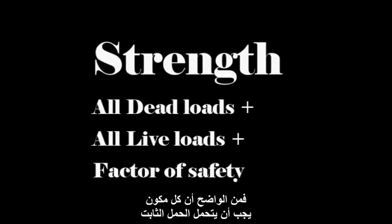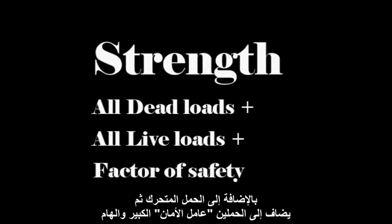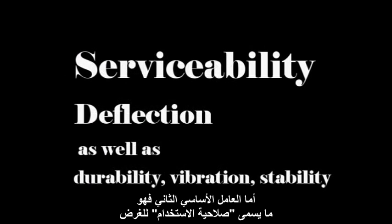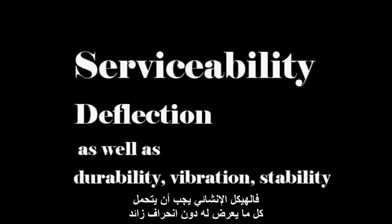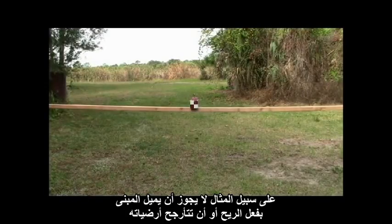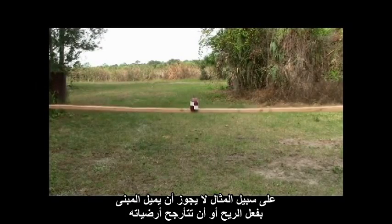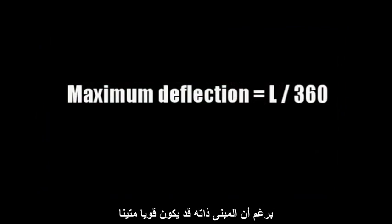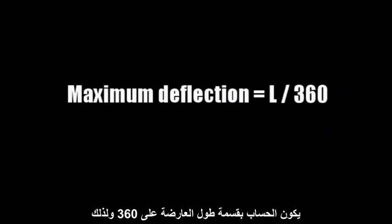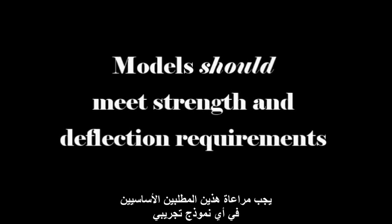There are two fundamental parameters of structural design. The first is strength — each component must be able to hold the dead load plus the live load plus a significant factor of safety. The second is serviceability — the structure must support all loads without excessive deflection. The building can't sway in the wind or have bouncy floors, even if perfectly strong. Building codes have an allowable deflection; for the towers, it's the beam length divided by 360, or L over 360. Any experimental model should meet these two basic requirements.